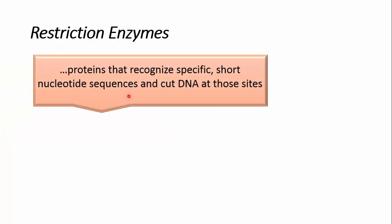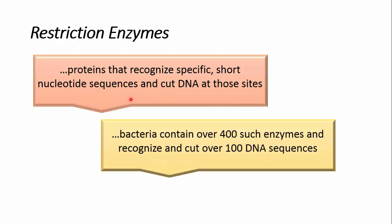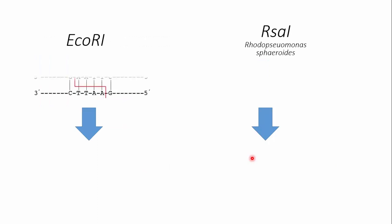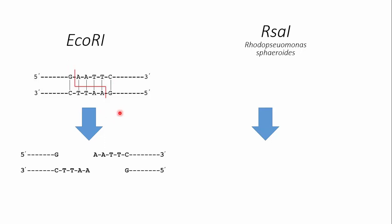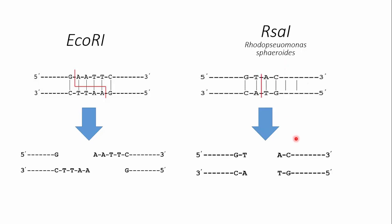Restriction enzymes are proteins that recognize specific short nucleotide sequences and cut DNA at those sites. Bacteria normally have around 400 such enzymes that recognize and cut over 100 different DNA sequences. For example, EcoRI cuts DNA in a sticky manner, producing sticky end overhangs that allow easy ligation. In contrast, RSA1 produces blunt ends with no overhangs, making ligation more difficult.